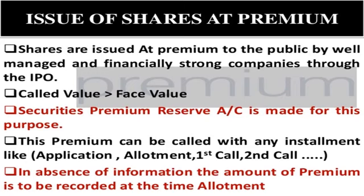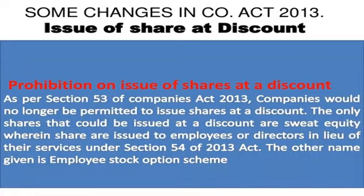A security premium reserve account is made for this purpose. This premium can be called with any installment like application money, allotment money, first call money, second call money, etc. In the absence of any information, the amount of premium is to be recorded at the time of allotment. Issue of shares at discount: as per Section 53 of the Companies Act 2013, companies should no longer be permitted to issue shares at a discount. The only shares that could be issued at discount are sweet equity shares, wherein shares are issued to employees or directors in lieu of their service under Section 54. The other name given is employee stock option scheme.